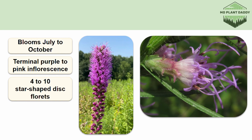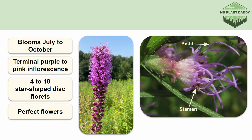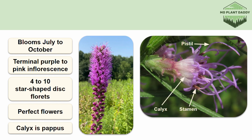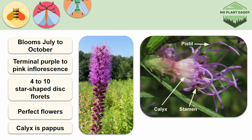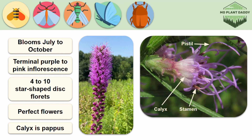Each flower head contains four to ten star-shaped disc florets. The flower heads have no ray florets, but each disc flower is perfect, so it has many stamens and a two-branched pistil. Additionally, the calyx is represented by feathery white pappus. Lastly, gay feather is pollinated by bees, moths, flies, butterflies, and beetles.